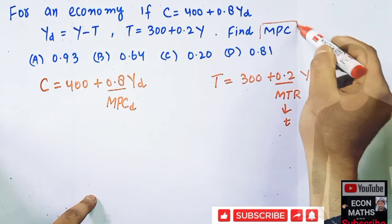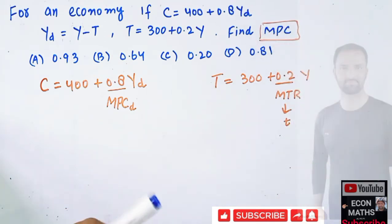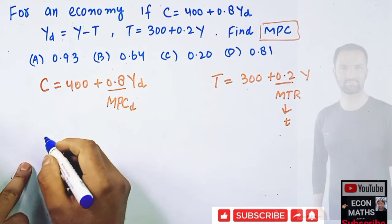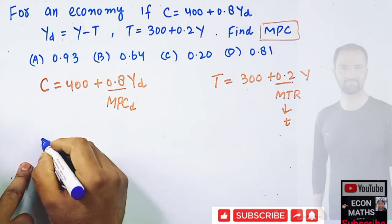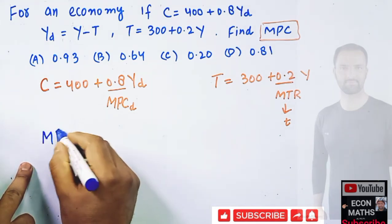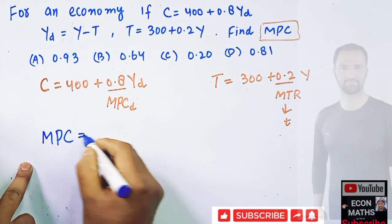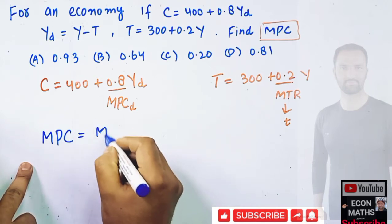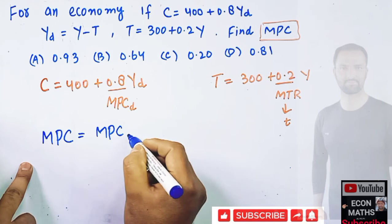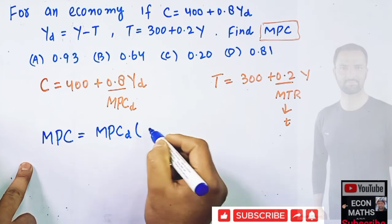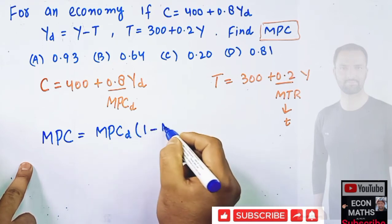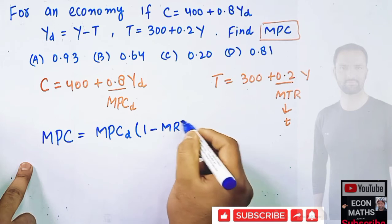Now to get the total marginal propensity to consume, the relationship is given by: MPC equals marginal propensity to consume of disposable income times (1 minus marginal rate of tax).